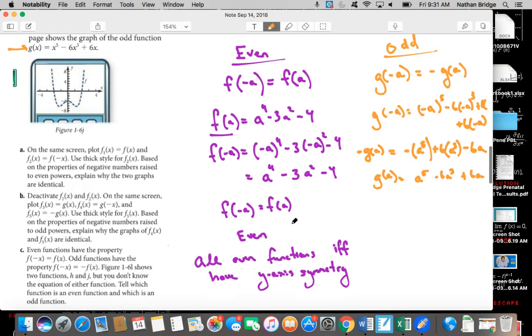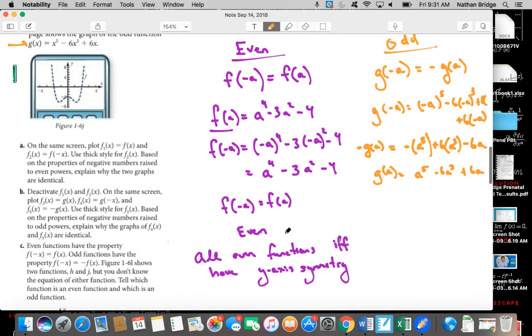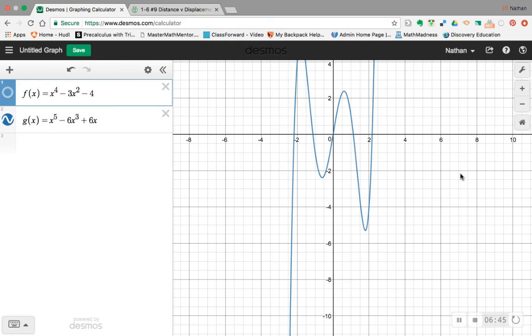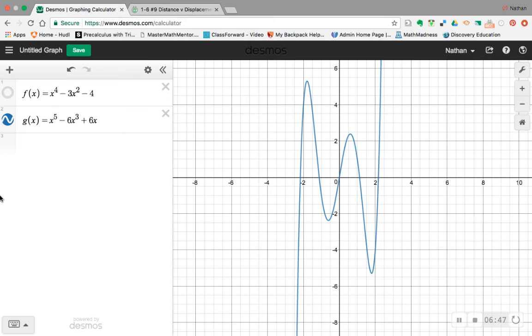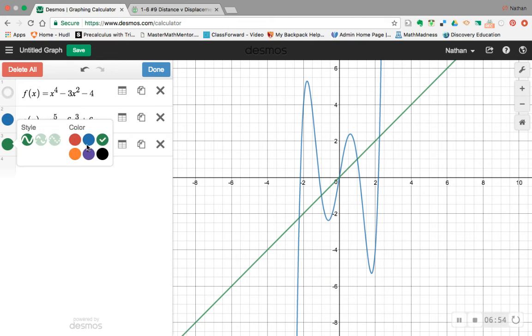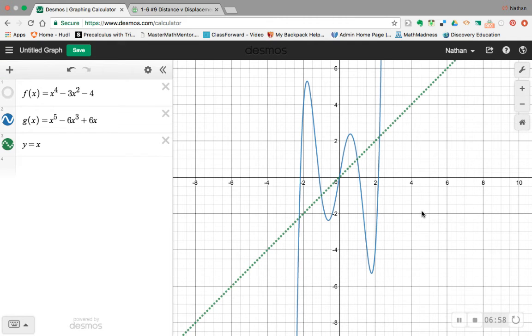Now, we said earlier that even functions have y-axis symmetry. And sure enough, as you might expect, odd functions have symmetry too. It's just that they have origin symmetry. And I can show that, and I'll dot that so you guys can see that a little bit more clearly. And that makes a ton of sense.